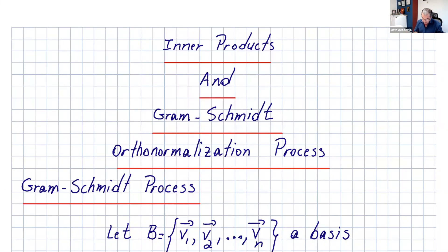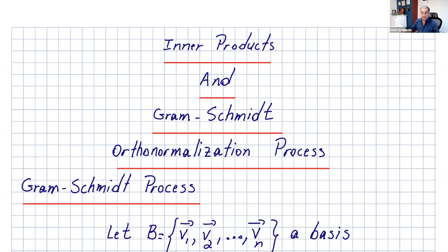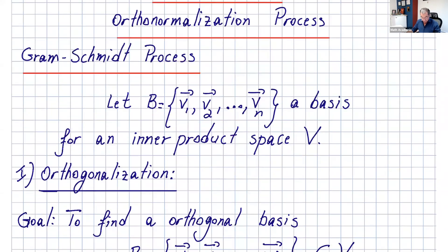Hi and welcome everyone. This lecture I want to go over inner product and Gram-Schmidt orthonormalization process. We did go over inner product spaces and the Gram-Schmidt orthonormalization process in my last videos. In the last video I did the Gram-Schmidt with a vector in R2 and a vector in R3, and we used the dot product for that. Now in this video we'll use a different vector space, but before we do that let me go over the process one more time.